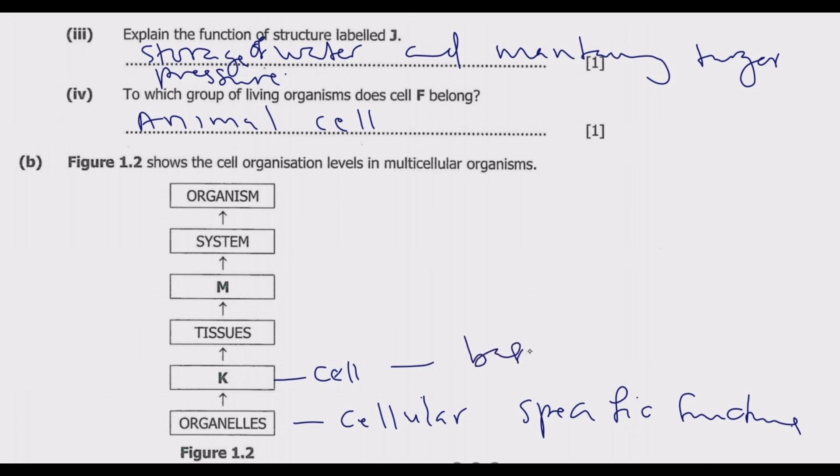Because tissues are groups of cells, meaning K should be cells. Cells are the basic fundamental units of life. You need to take note of these key points. Then we have M. From M we go to system. Before system, we need to have something.